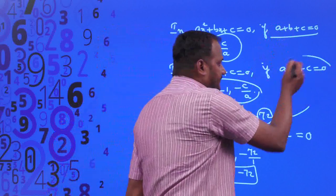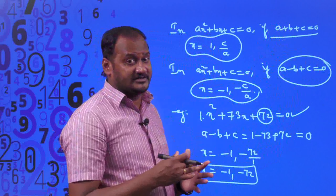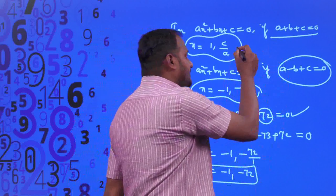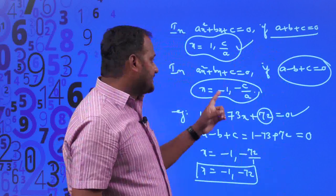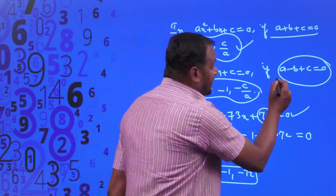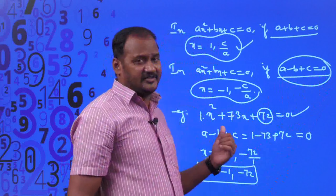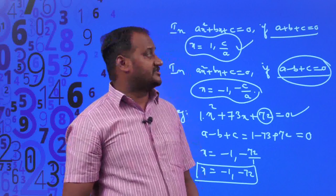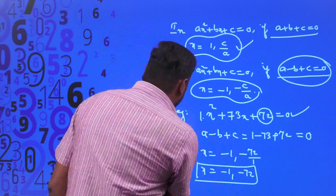These two conditions must be satisfied. If the given quadratic equation satisfies these two conditions, we can easily find the roots: x = 1, C/A when A + B + C = 0, and x = -1, -C/A when A - B + C = 0. I think you will really enjoy these two strategies. Now we will move on to the next level of quadratic equations.